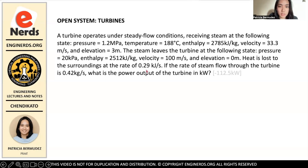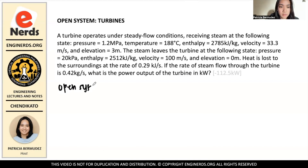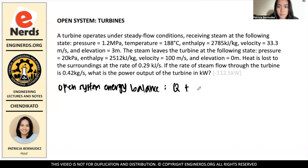Our heat is also in kilowatts because it is kilojoules per second. Since it is an open system, we have to use the open system energy balance. The formula is: Q plus W equals the change in kinetic energy plus the change in potential energy plus the change in enthalpy.